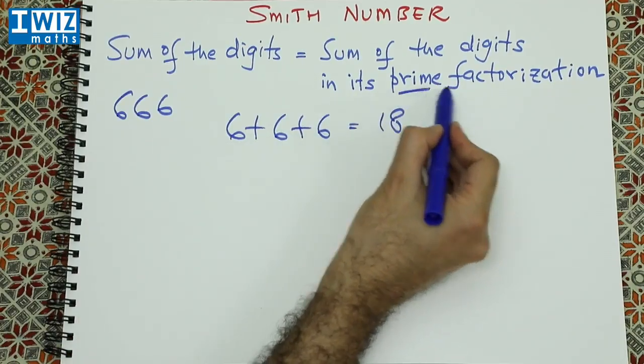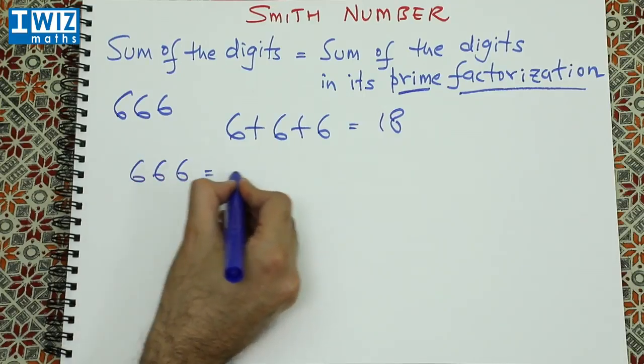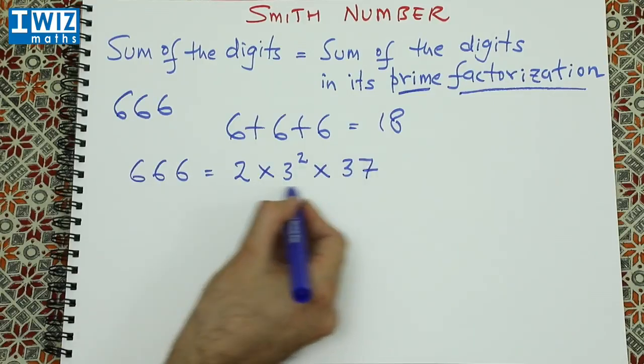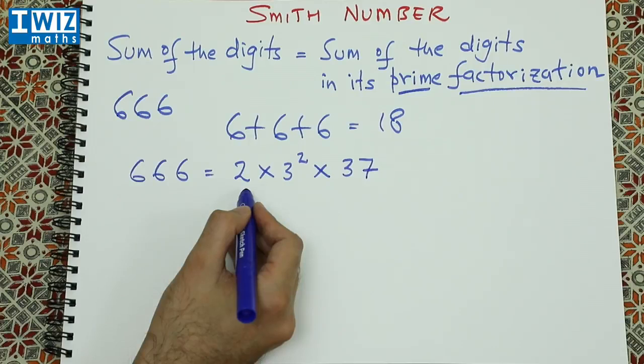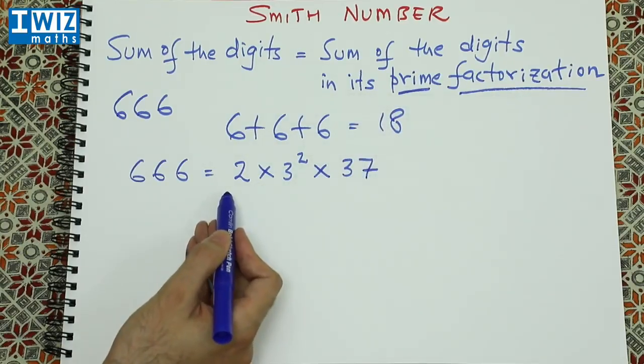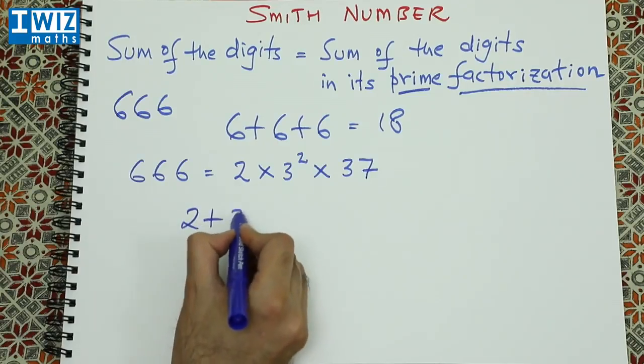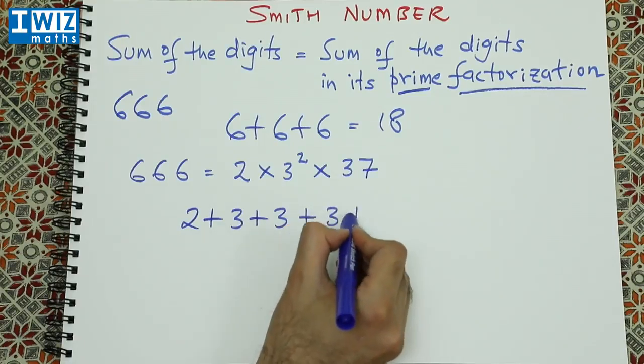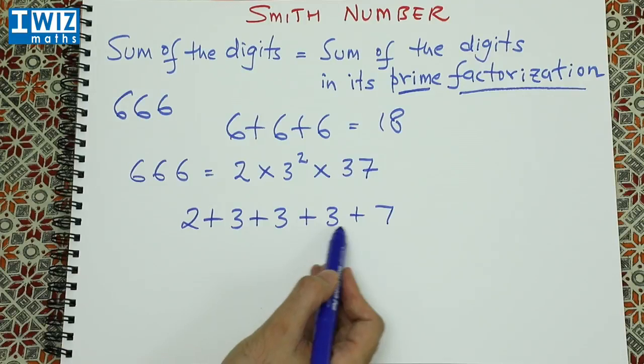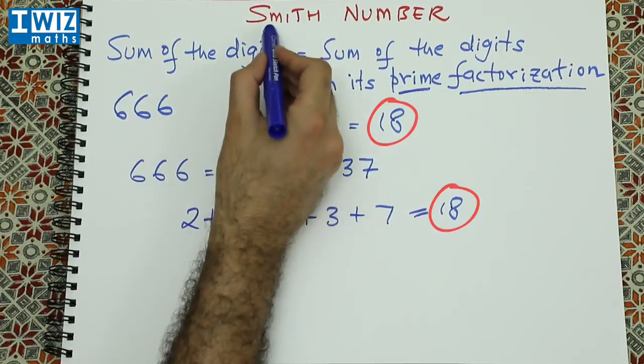Now what we want is the prime factorization of 666. So the prime factorization would be 2 times 3 squared times 37. These are all prime numbers. So what we do need to do now is consider the sum of the digits in the prime factorization. That would be 2 plus 3 plus 3 plus 3 plus 7. So 37 has two digits, 3 and 7. If we add this up, we get 18. So the number 666 also happens to be a Smith number.